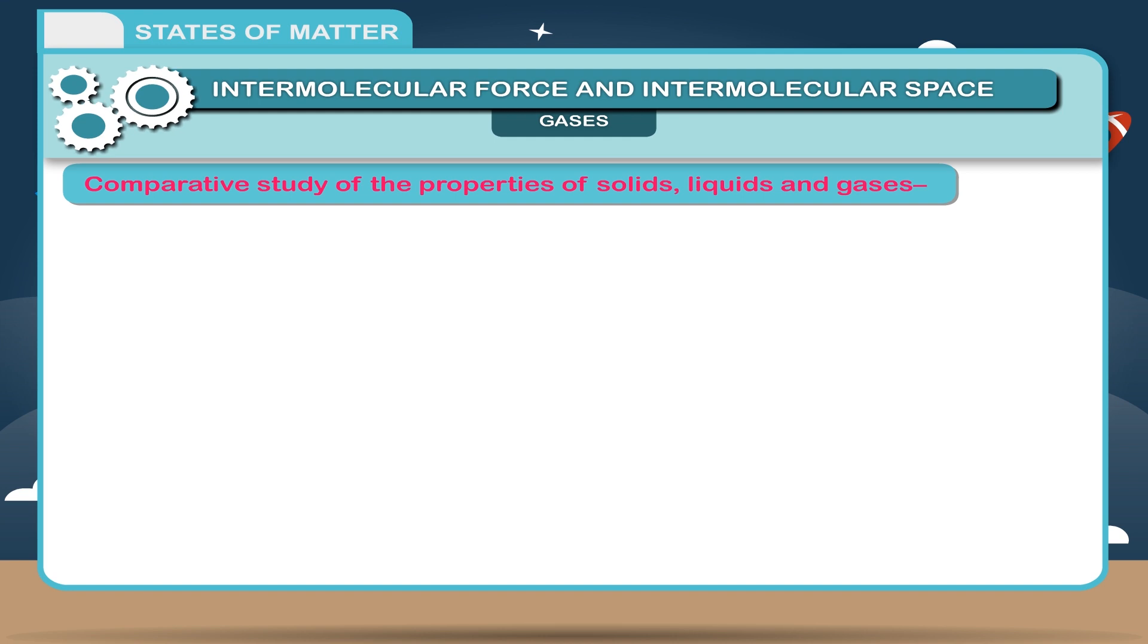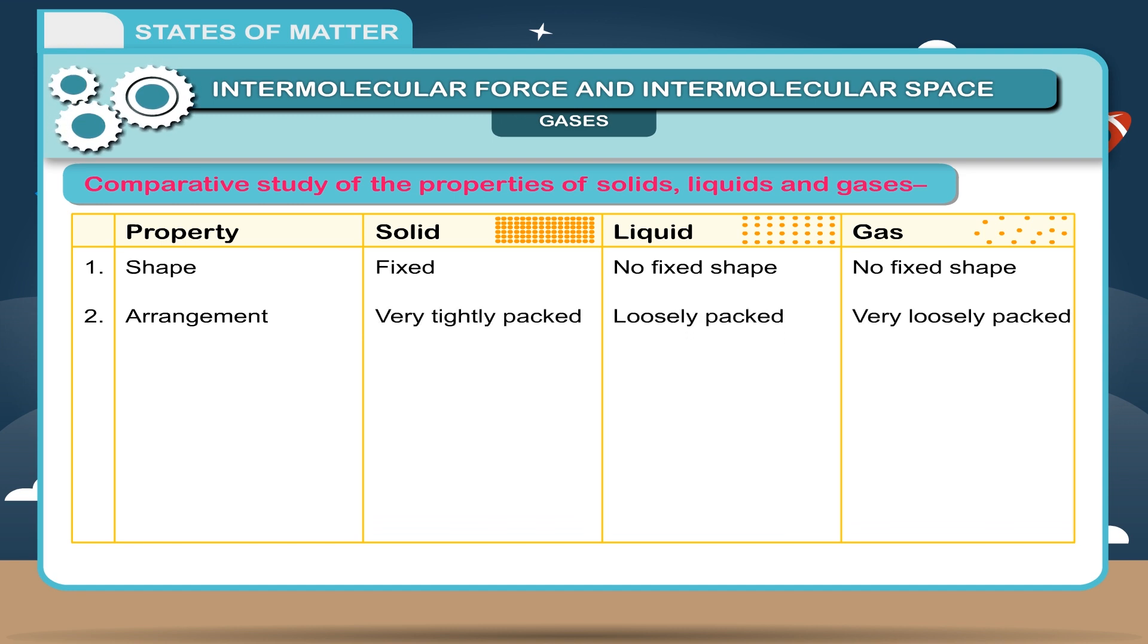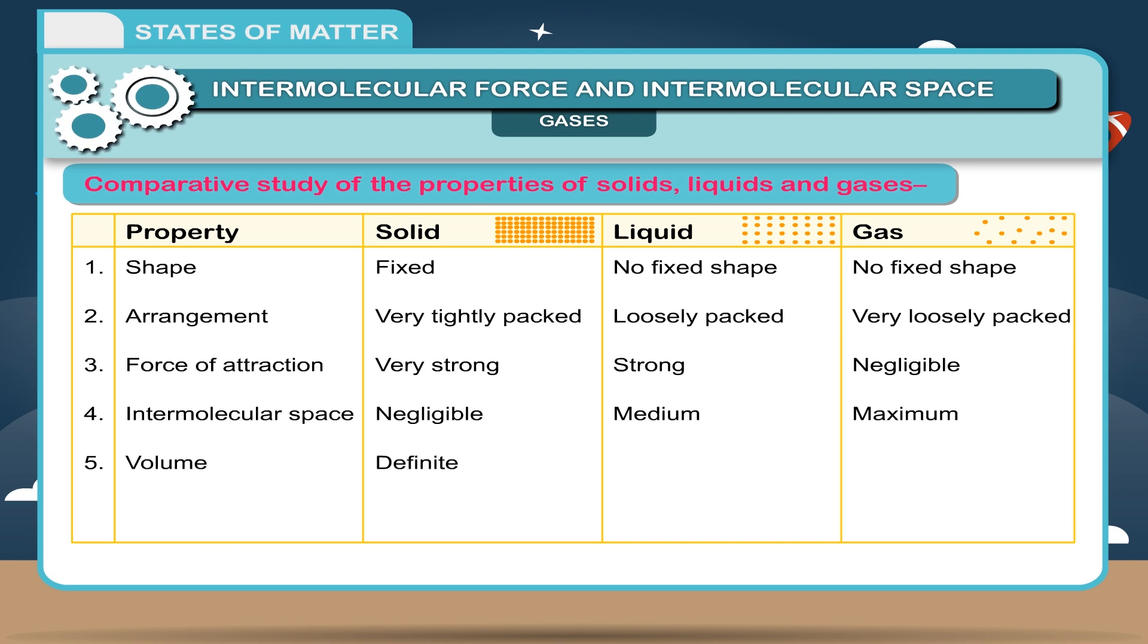Comparative study of the properties of solids, liquids, and gases. Property: Solid, Liquid, Gas. Shape: Fixed, No fixed shape, No fixed shape. Arrangement: Packed very tightly, Loosely packed, Very loosely. Force of attraction: Very strong, Strong, Negligible. Intermolecular space: Negligible, Medium, Maximum. Volume: Definite, Definite, Not definite. Compressibility: Non-compressible, Can be compressed slightly, Can be compressed easily.